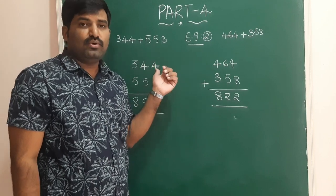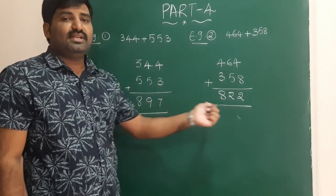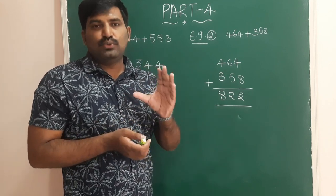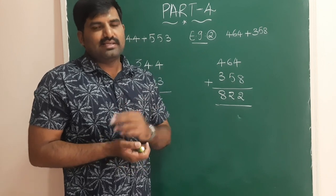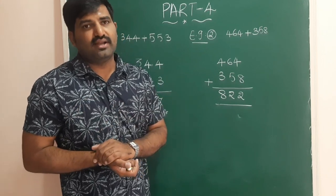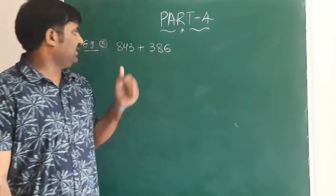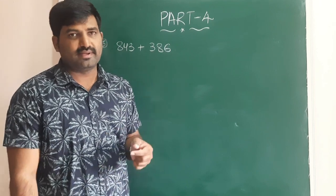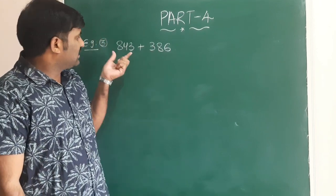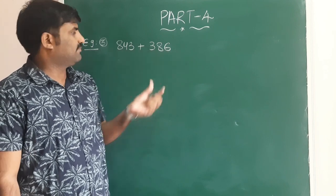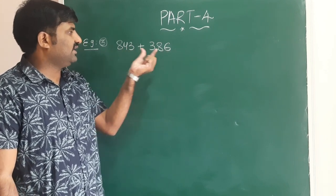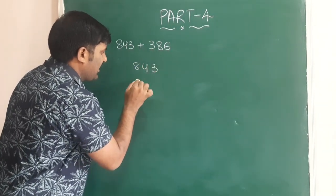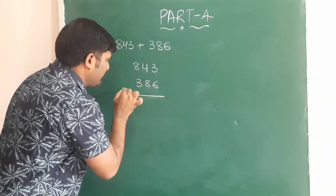These were two examples where the sum of two three-digit numbers is also a three-digit number. Next I will give one more example where the sum of two three-digit numbers is a four-digit number. In Example 3, the two numbers are 843 and 386.